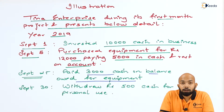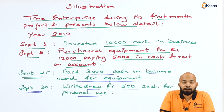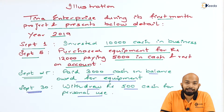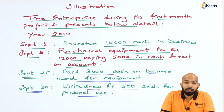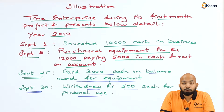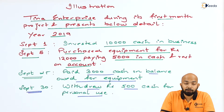The last entry: withdrew ₹500 cash for personal use. This clearly states there has been a drawing. We will be passing the drawing entry, and since cash is going out, we will prepare the entry accordingly.